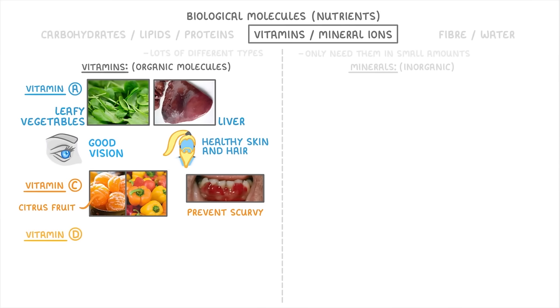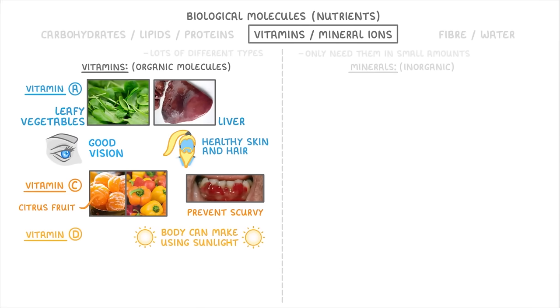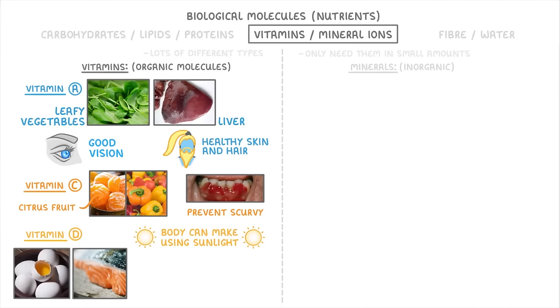There's also vitamin D, which is a weird one in that your body can actually make it itself using sunlight. But you can also get it in foods like eggs and oily fish, and its main purpose is to help you absorb calcium.